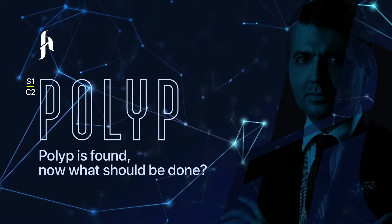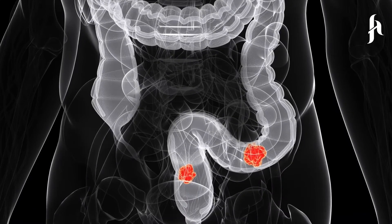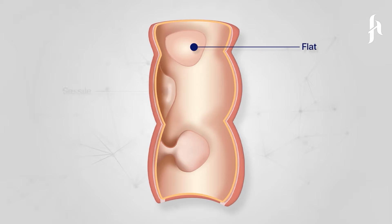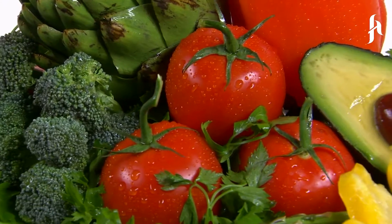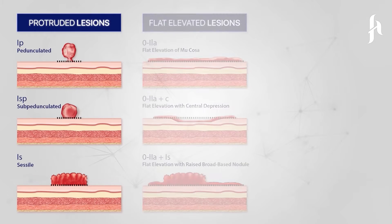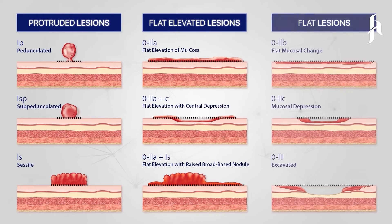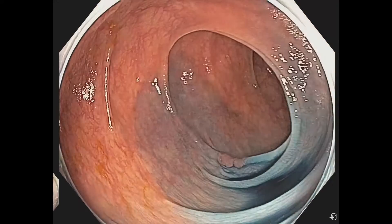A polyp is found — now what should be done? On our previous video, we talked about polyp types, shapes, and the etiology behind them. What happens next when a patient having a polyp is diagnosed with a control colonoscopy or with evaluation upon presentation of related symptoms?